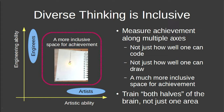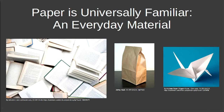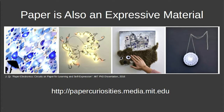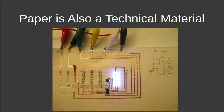Familiarity: paper is a universally familiar material — everyone knows paper, everyone knows books, everyone knows what to do with it. Paper is also very expressive, allowing us to address the artistic axis. For examples of what you can do with paper as an expressive material, visit papercuriosities.media.mit.edu. Paper is also a technical material, making it a really good medium that meets our goal of balance while being approachable.